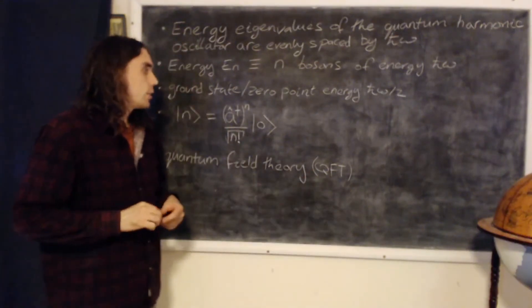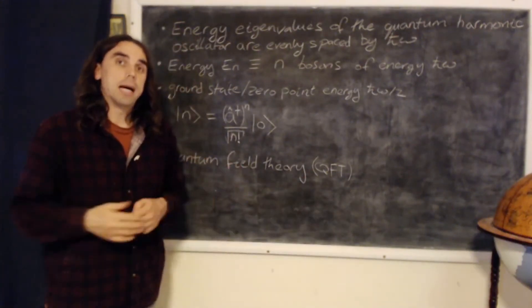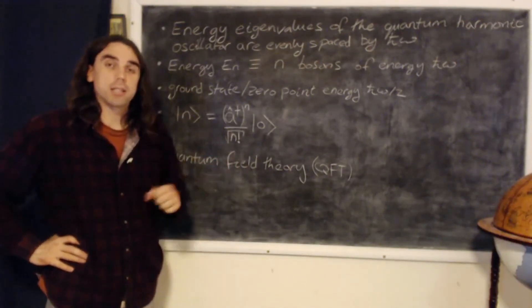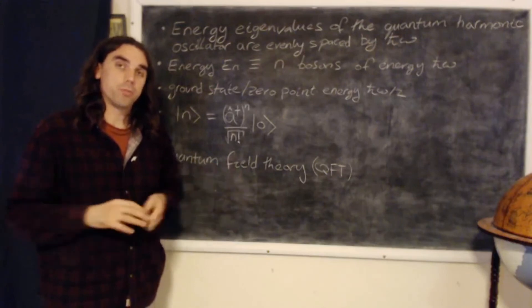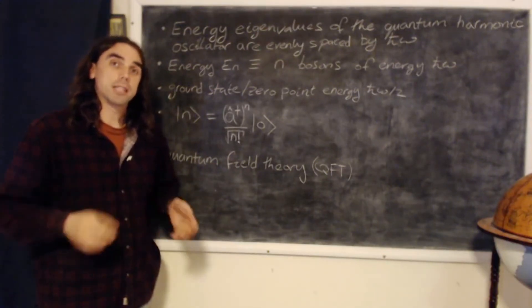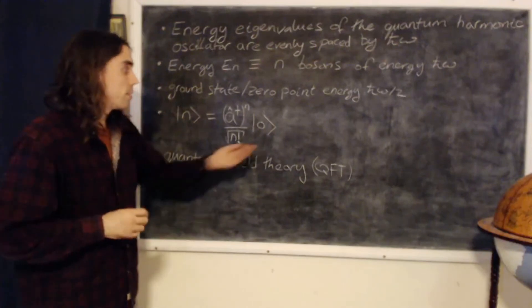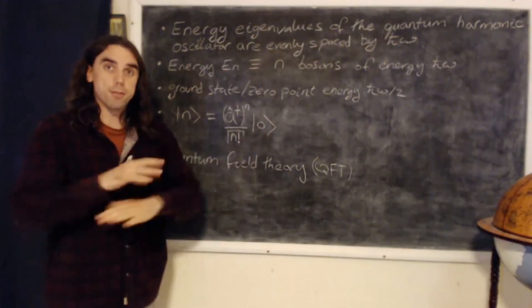So quantum field theory treats all of space time as a big quantum field, and depends which kind of particle you're working with, each will have its own type of quantum field. And the particles are excitations out of that quantum field. And mathematically, what we do is we start with a vacuum state for the universe, so vacuum everywhere.